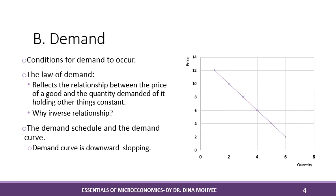What determines the demand for a good? There are many factors that affect demand. The most important is the price of the good. But there are also many other factors, such as income, the prices of related goods, expected future prices or future income, tastes, and the size of the market. We will begin with the law of demand, which reflects the relationship between the price of the good and the quantity demanded of it, holding other things constant.